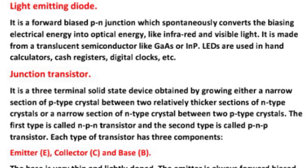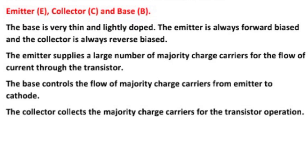Junction transistor. What is a junction transistor? It is a three terminal solid state device obtained by growing either a narrow section of p-type crystal between two relatively thicker sections of n-type crystals, or a narrow section of n-type crystal between two p-type crystals. The first type is called a PNP transistor. Each type of transistor has three components: emitter E, collector C, and base B. The base B is very thin and lightly doped.